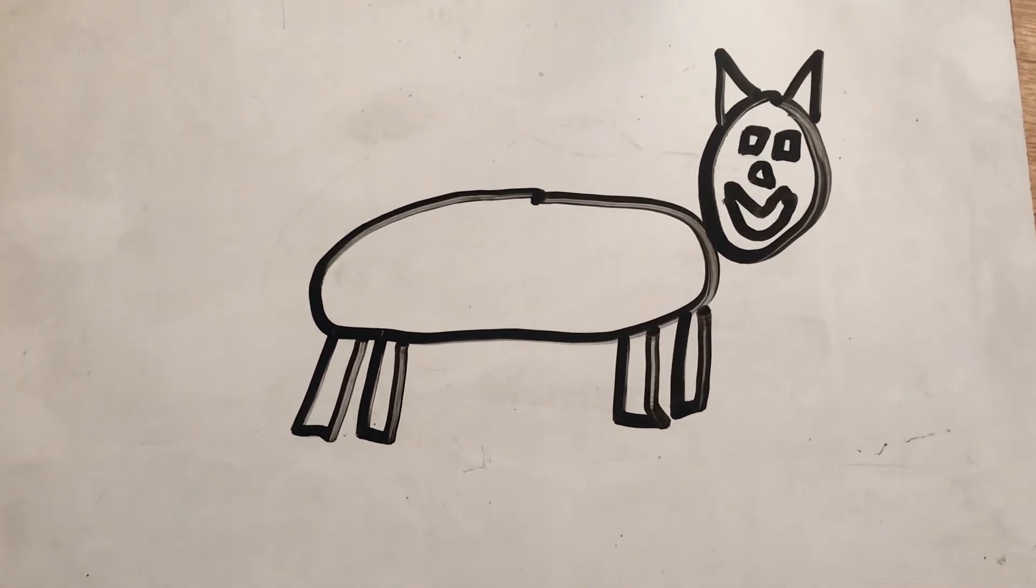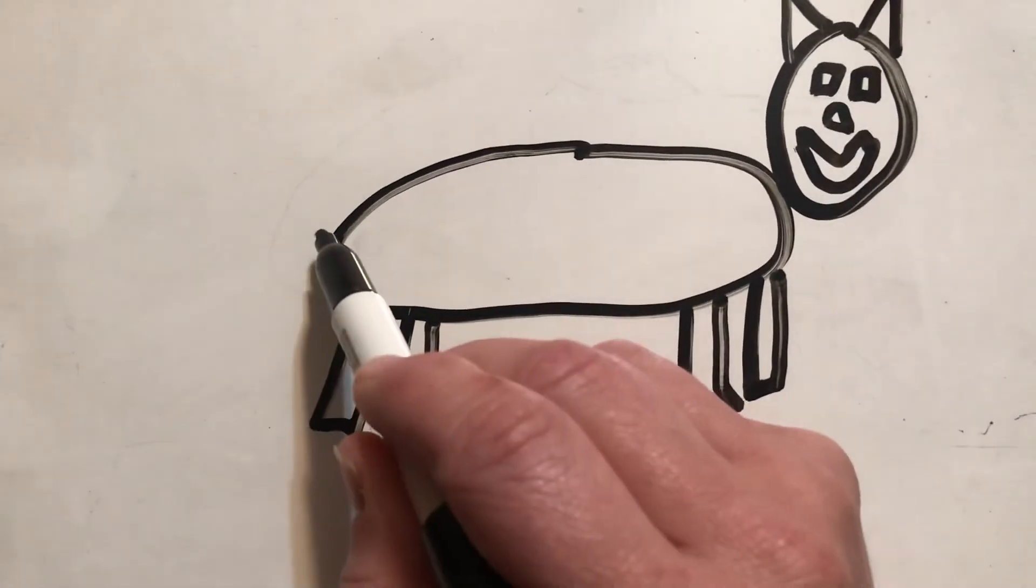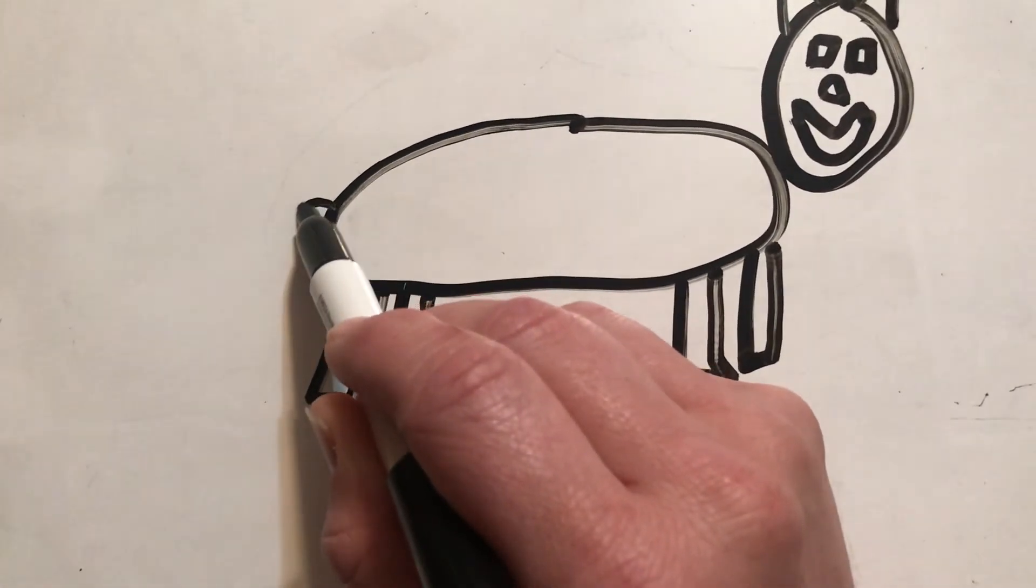We could make it like a cat, it could be a cat, and then you could give it a long little tail.